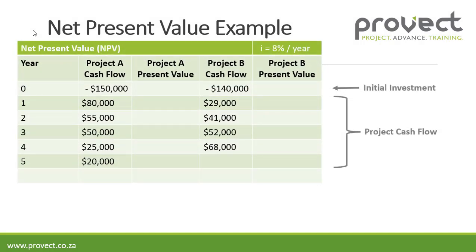We start off with project A and project B, and we've got a cash flow for each. For project A, we've got an initial investment of $150,000. For year 1, a cash flow — which is income minus expenses — of $80,000; year 2, $55,000; year 3, $50,000; year 4, $25,000; and year 5, $20,000.